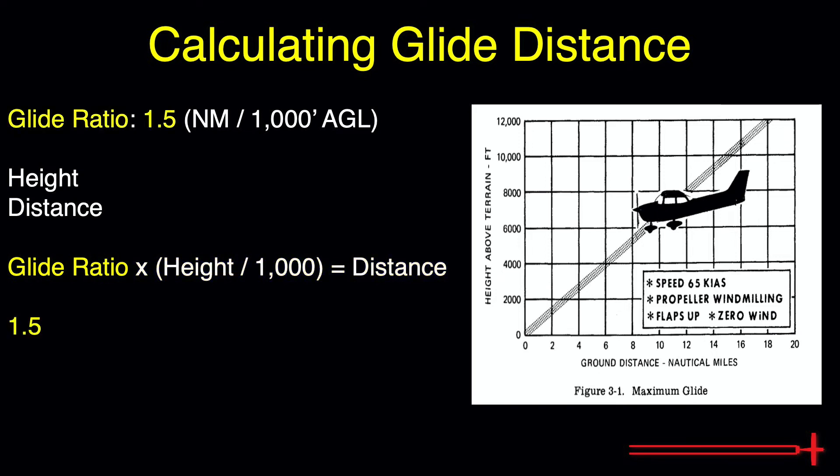Based on our expected glide ratio of 1.5, with a height of 5,000 feet AGL, we should expect a glide distance of roughly 7.5 nautical miles. If we look over to our chart, we see that the ratio works out pretty well. We expect about a 7.5 mile glide distance here too.